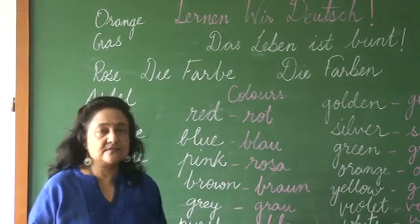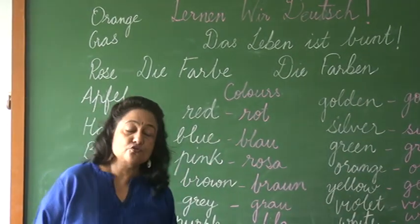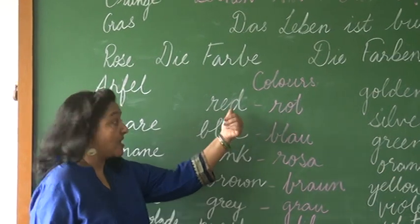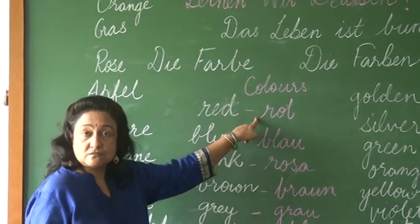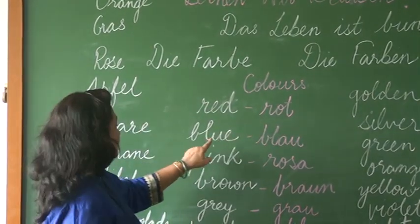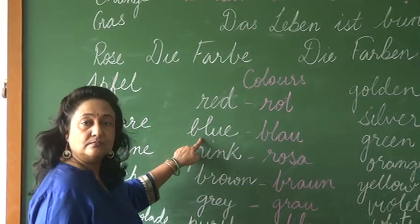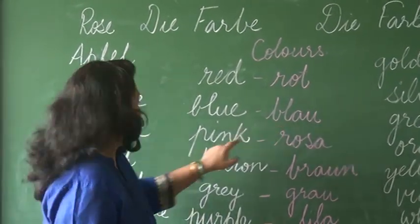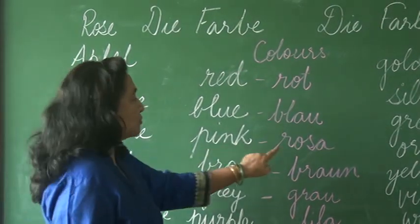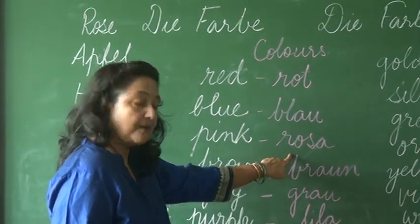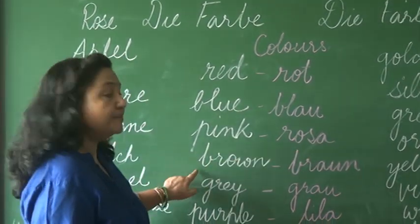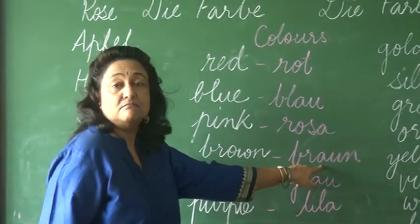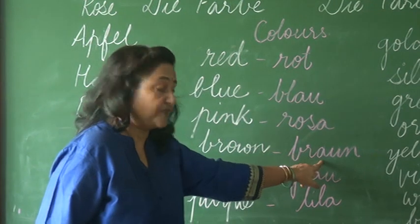Now, coming to the basic colours which you all need to know — very important. Red is known as Rot. Blue is Blau. Pink is Rosa. Brown — it is pronounced as Braun. But mark it, the spelling is different.